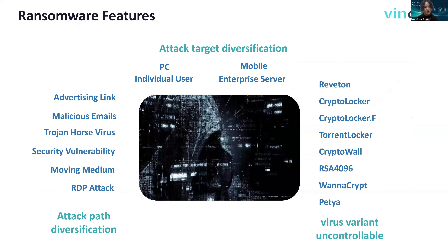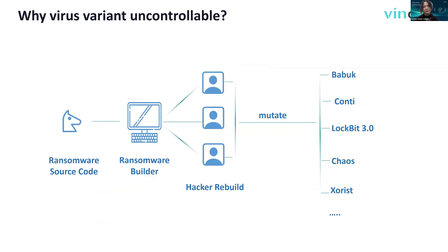Let's look at ransomware features. Firstly, the attack methods are various — like malicious advertisements, malicious emails, and RDP attacks. Also, the rate of ransomware variants is very rapid; we can even say it's uncontrollable. Why? Because of ransomware source code or builder leakage. When the source code or builders are leaked, it becomes easier for unskilled cybercriminals to develop their own ransomware by making little modification of the original code.